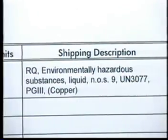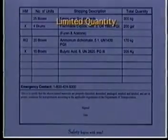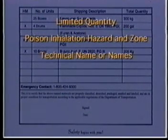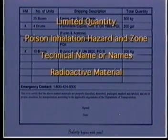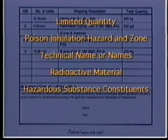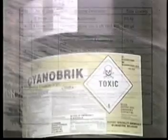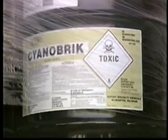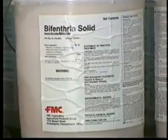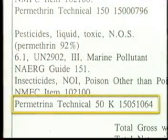Other additional information which may be required on the shipping paper includes limited quantity, poison inhalation hazard and zone A, B, C, or D as appropriate, technical name or names of contents, radioactive material, hazardous substance constituents, and residue last contained. Non-regulatory information concerning the material, such as brand or trade name, may be included, but must be listed after the required DOT hazardous material description.